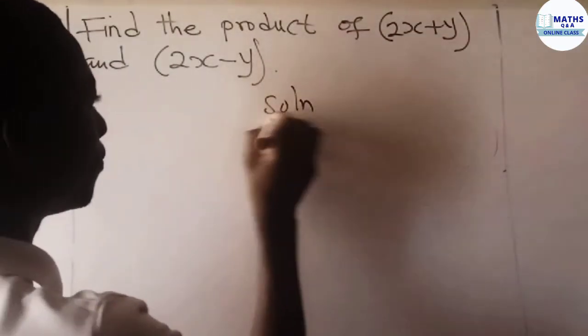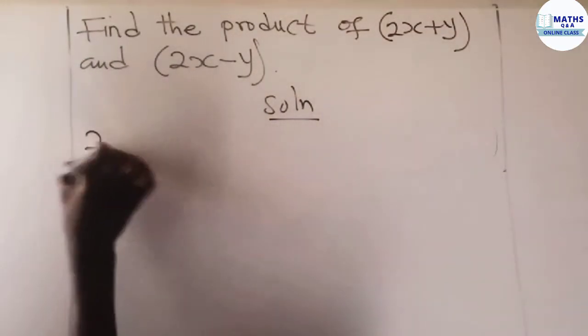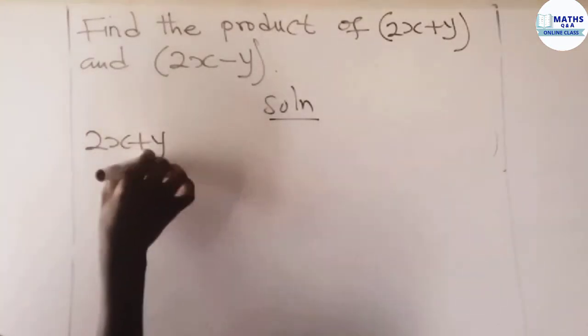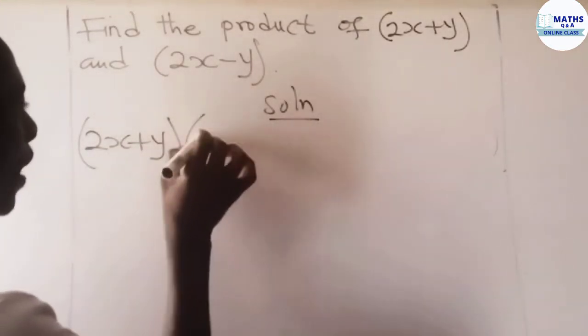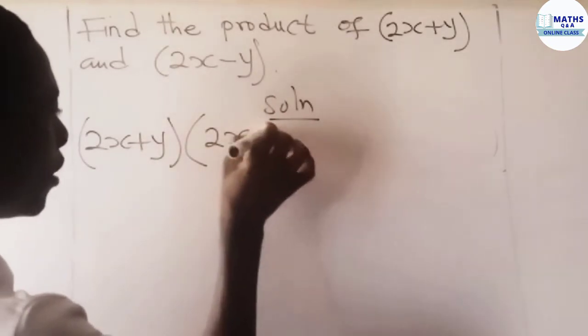So let's solve that. You write 2x plus y, multiply it by 2x minus y.